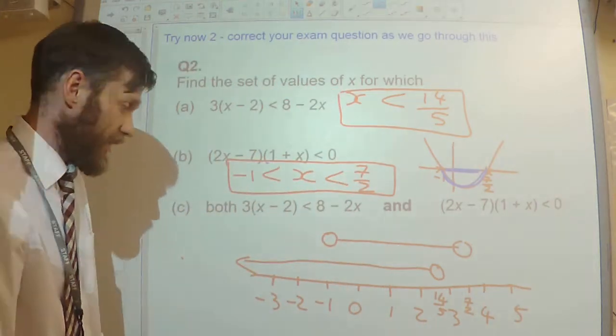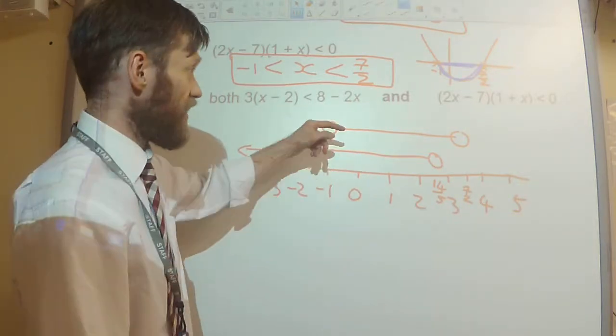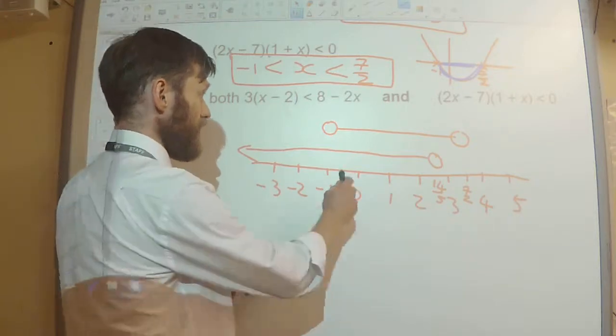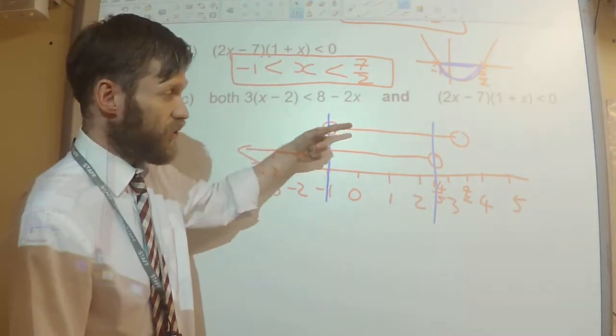So now I'm looking at this, and I'm saying, right, where on the number line are both inequalities satisfied? Well, it's in between here and here. That's where the line appears twice.